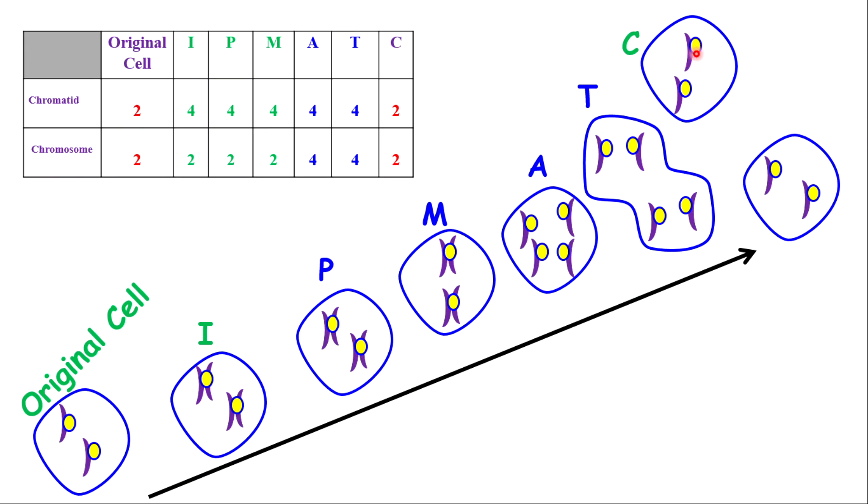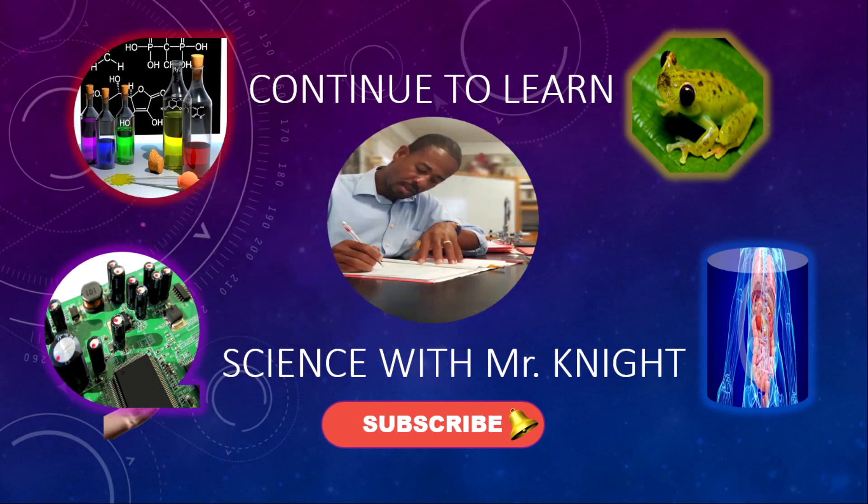Two chromatids each, two chromosomes. So each cell, two chromatids, two chromosomes, just like the original cell. And that's how we look at the numbers for mitosis. I hope this was very easy and fun for you.